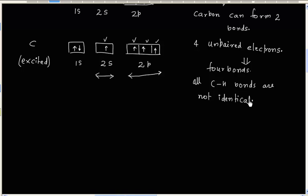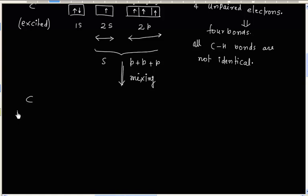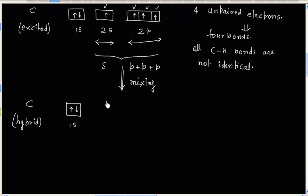So we have to think of something so that all 4 bonds become identical. And this can be done if I mix 1 2s atomic orbital and 3 2p atomic orbitals — that is, 1s and 3p atomic orbitals. If I mix all these, we can make hybrid orbitals. So we are mixing these 4 atomic orbitals and generating carbon in the hybrid state. The 1s is not used in mixing; only the 2s and 3p atomic orbitals are used. So we will have 4 hybrid orbitals, since the number of atomic orbitals mixed equals the number of hybrid orbitals formed.